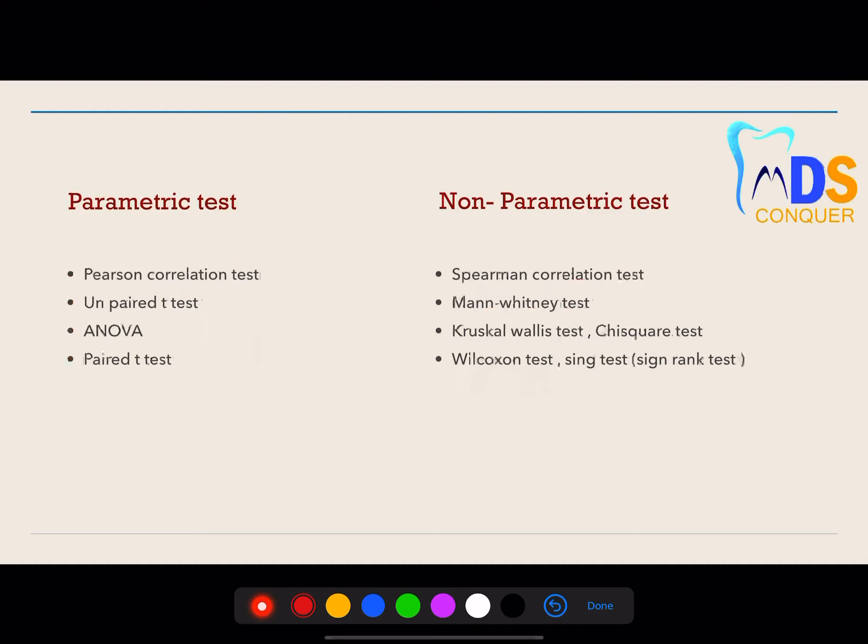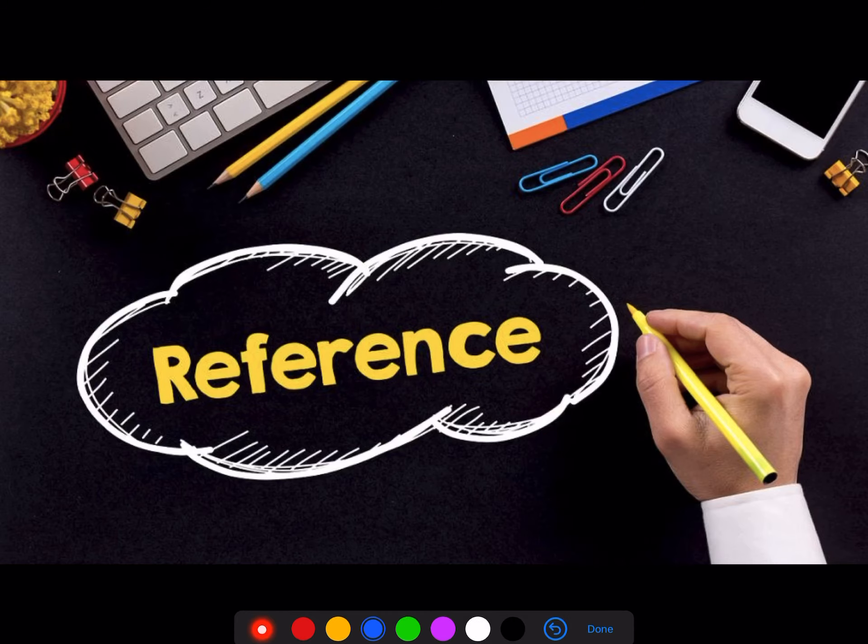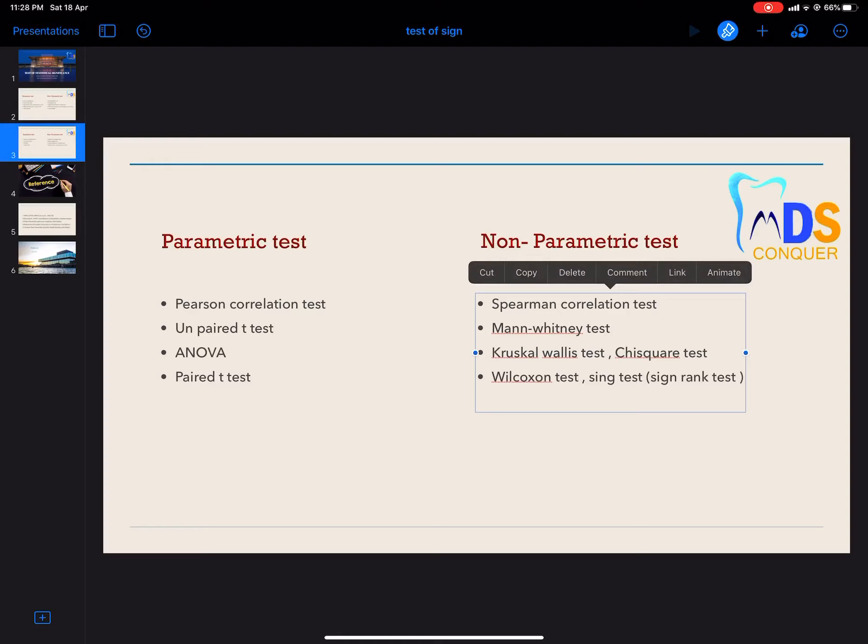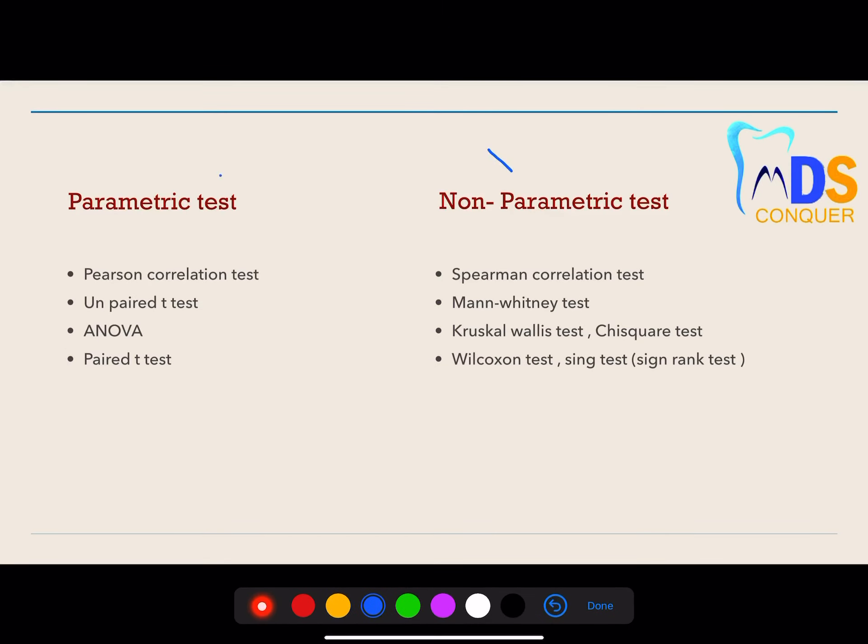The next important thing is the tests and their names. The most beautiful way of presentation is by a flowchart. You can write 'tests of statistical significance' and split it into two flowcharts: parametric test and non-parametric test. Again, you can split the flowcharts into subtypes.